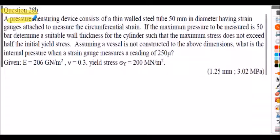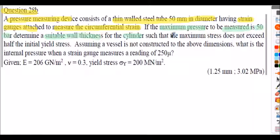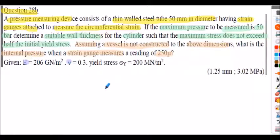Question 28b: a thin-walled steel tube pressure measuring device, 50 mm diameter, has strain gauges measuring circumferential strain. Maximum pressure to be measured is 50 bar. Determine a suitable wall thickness such that the maximum stress does not exceed half the initial yield stress. Then, given the vessel is constructed to those dimensions, find the internal pressure when the strain gauge measures 250 microstrain. Given: E, ν, and yield stress σ_y. Attempt this question.